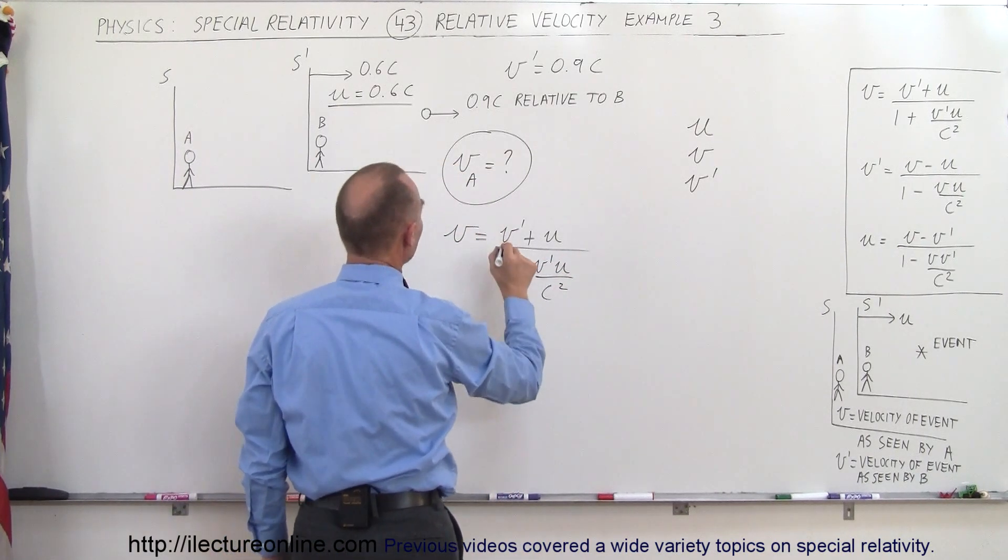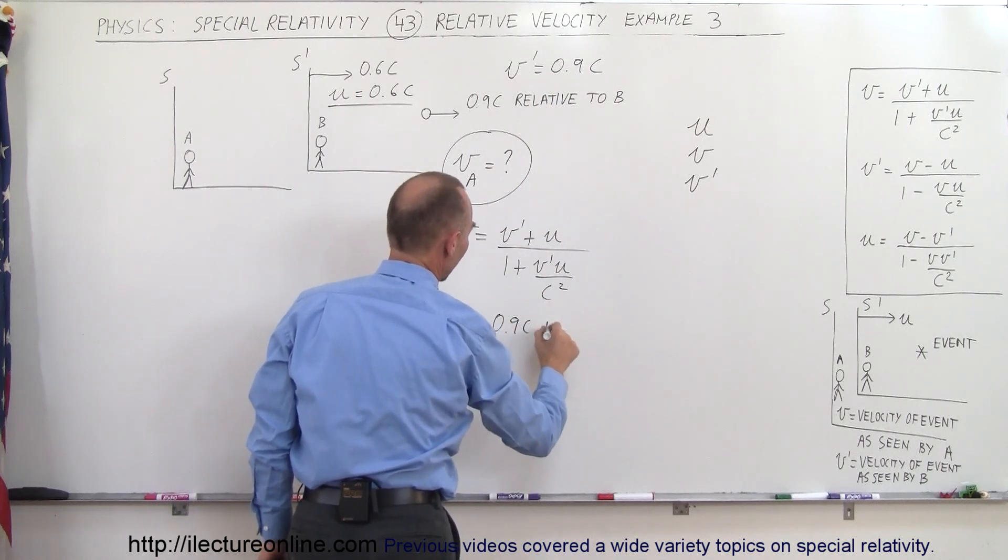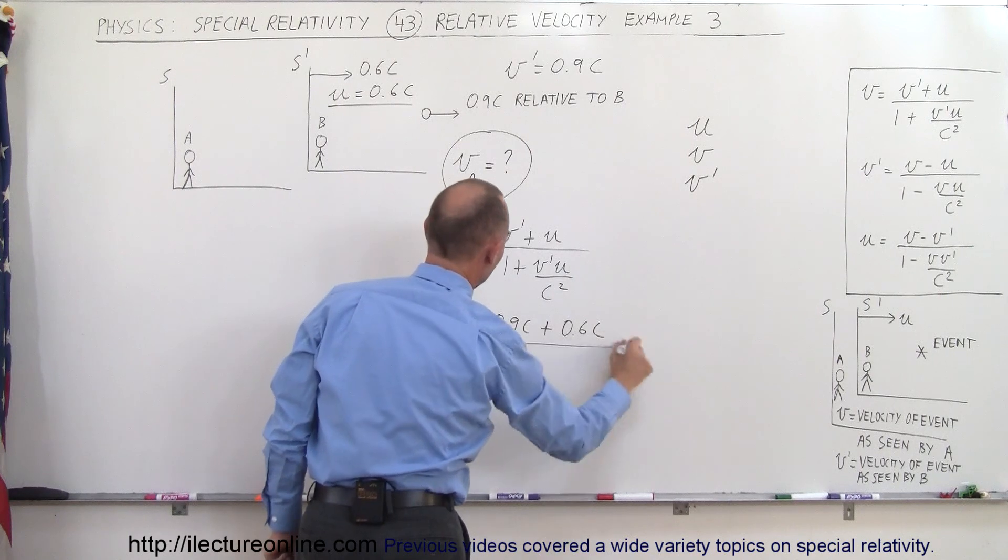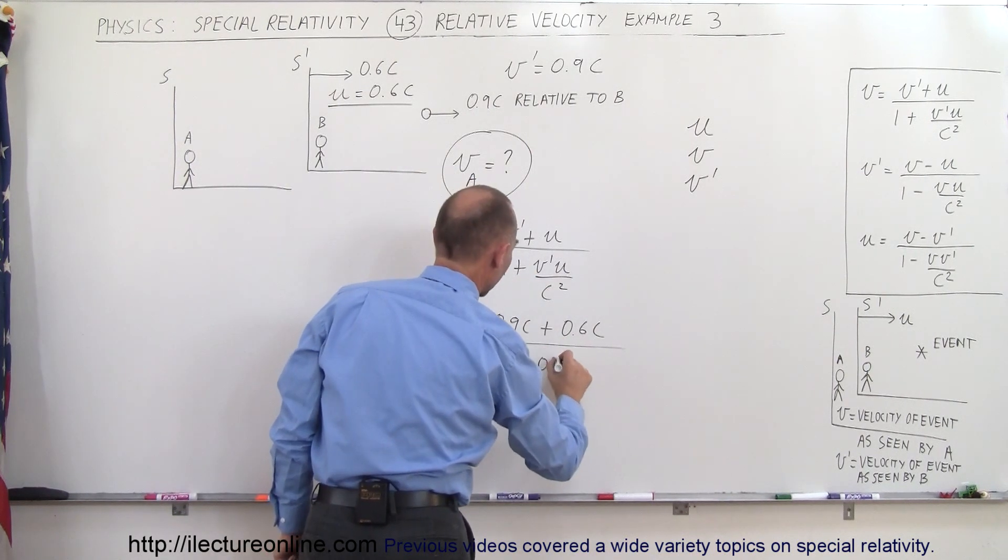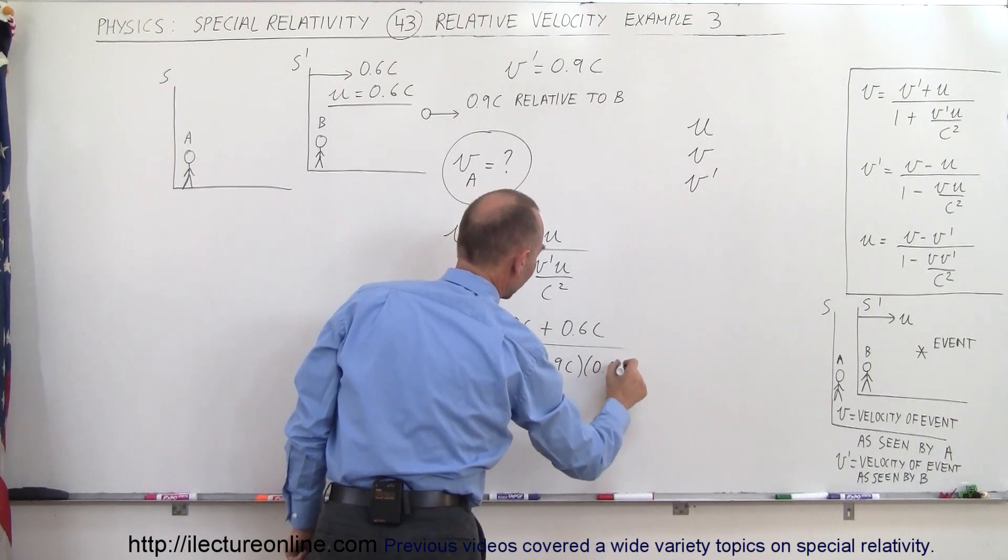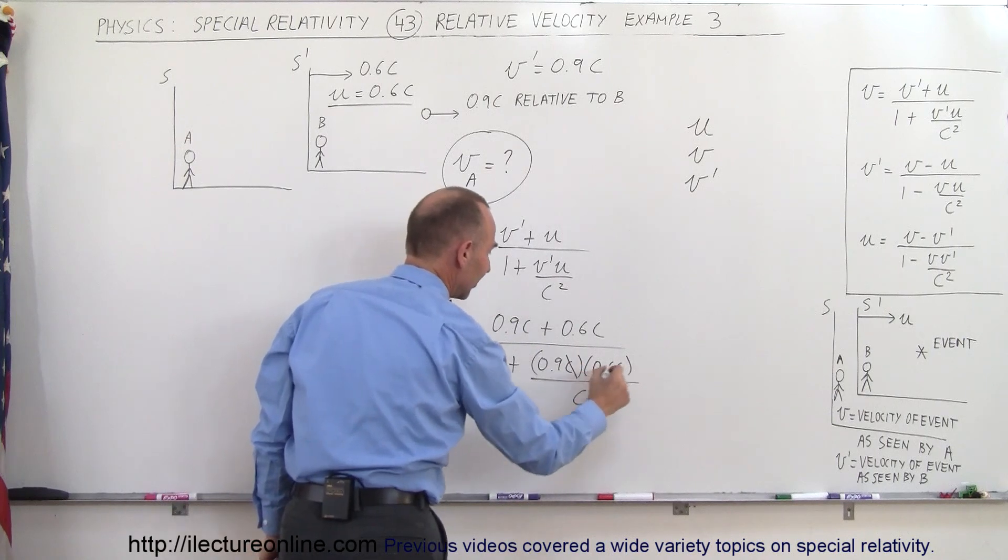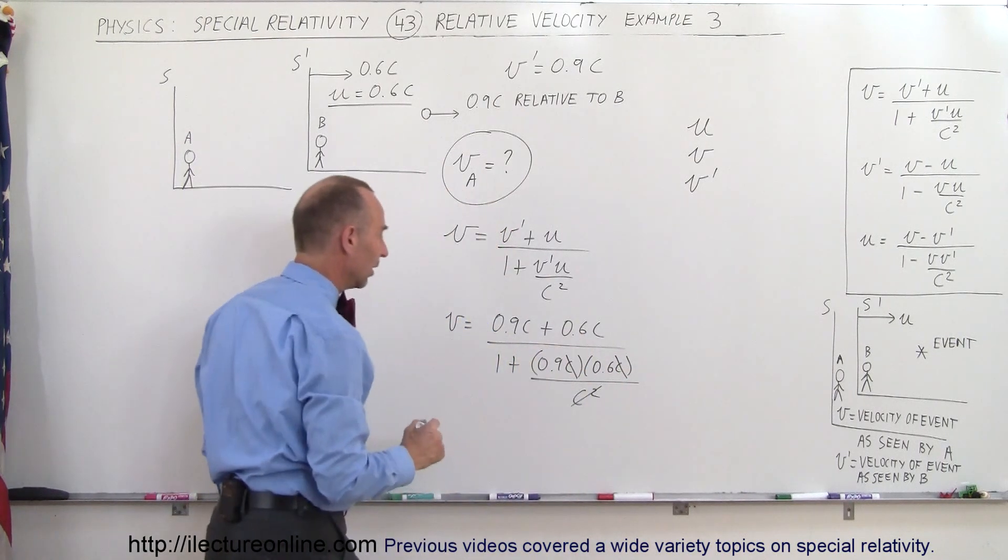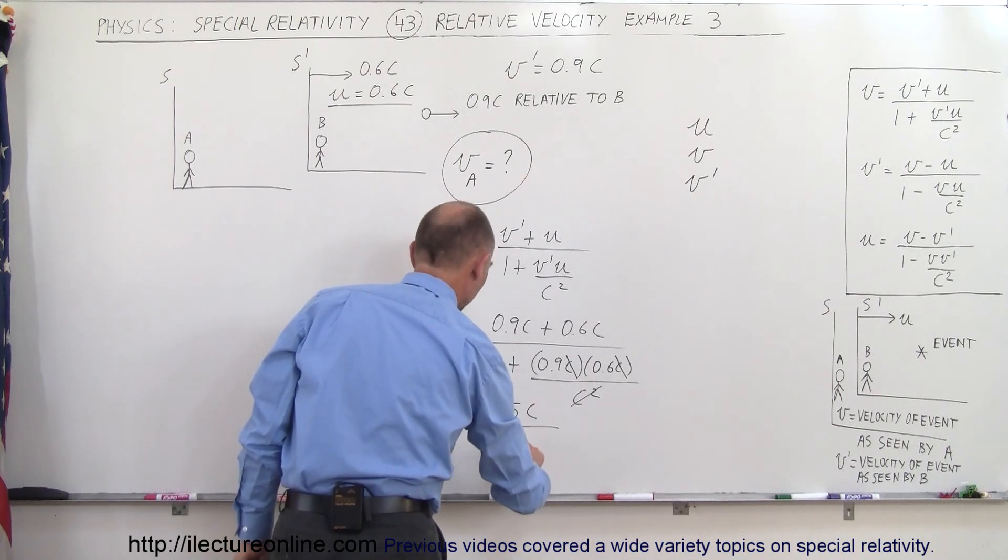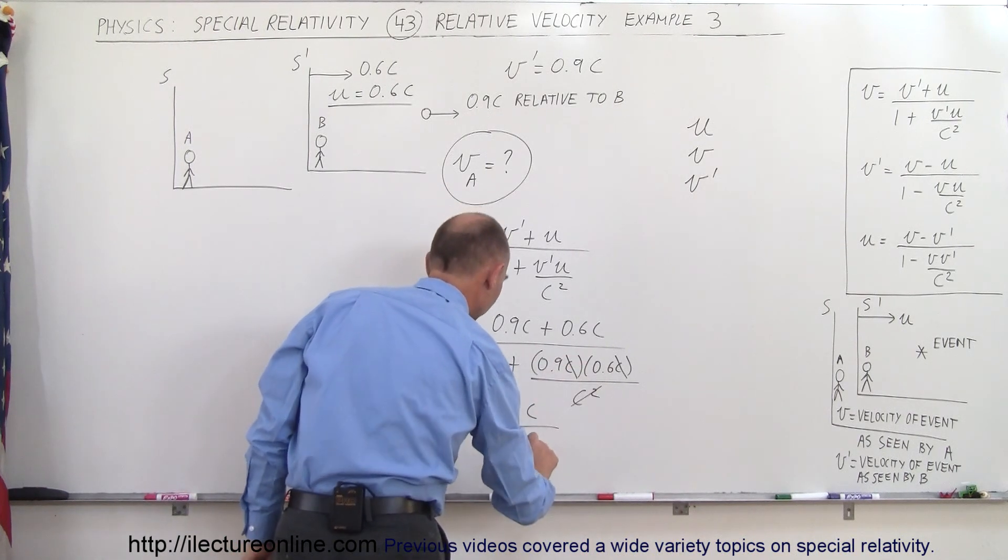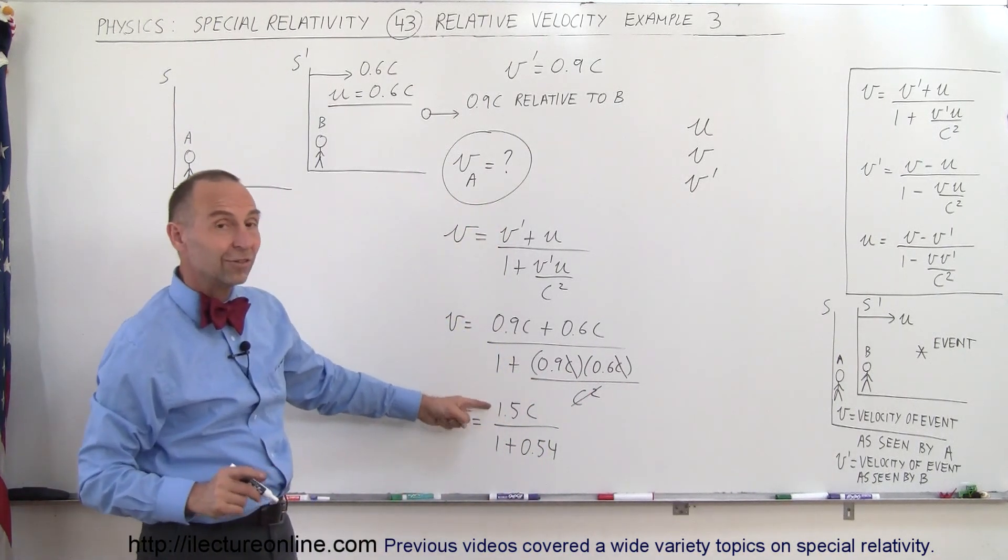That means that V is equal to V prime, which is 0.9C, plus U, which is 0.6C, divided by 1 plus V prime, which is 0.9C, times U, 0.6C, all divided by C squared. And right away we can see that these C's cancel out with this C squared. So this becomes V is equal to 1.5C divided by 1 plus 0.9 times 0.6 is 0.54.